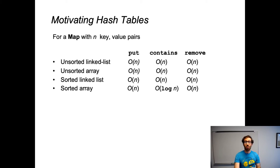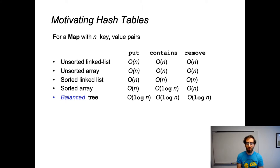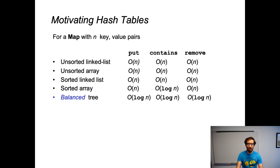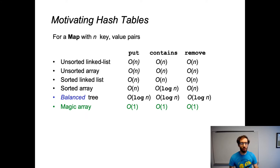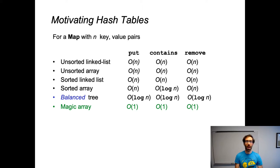As a teaser for a topic we'll get into after midterm break, using something called a balanced tree, we can get logarithmic performance for these operations, and there are situations where this will be exactly what we want. But today we're going to talk about a magic array that can do constant time for all of our map abstract data type operations.